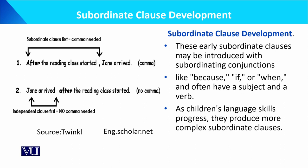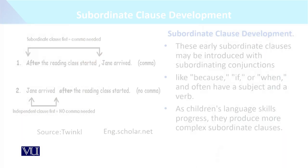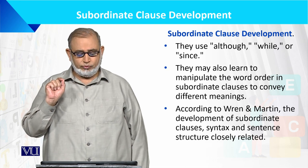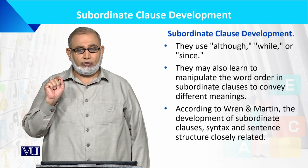When the independent clause occurs first and then the subordinate clause follows, the independent clause is made by a sentence and every clause conveys its separate meaning. They may use conjunctions like 'while' or 'since,' and children may also learn to manipulate word order.